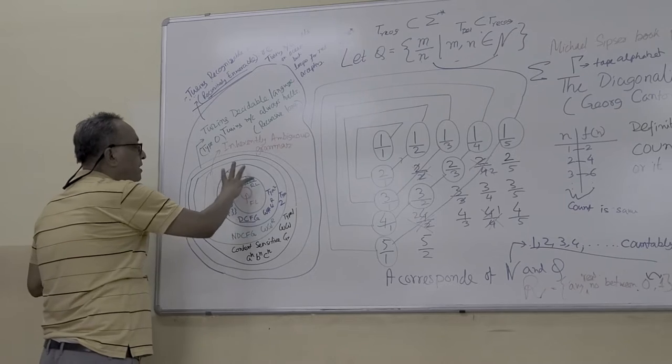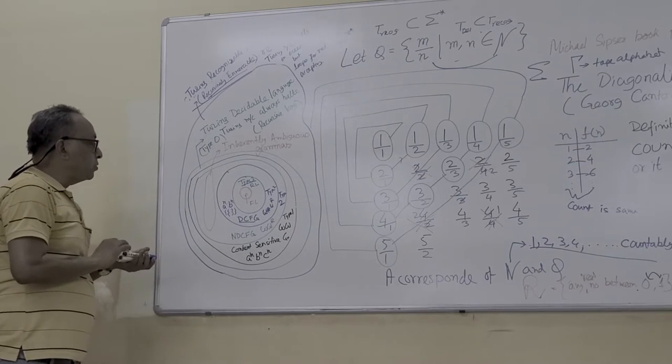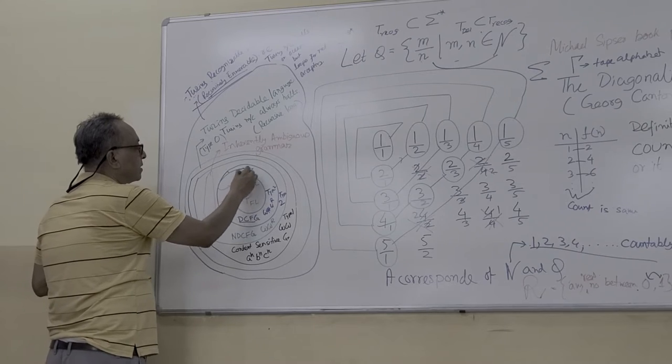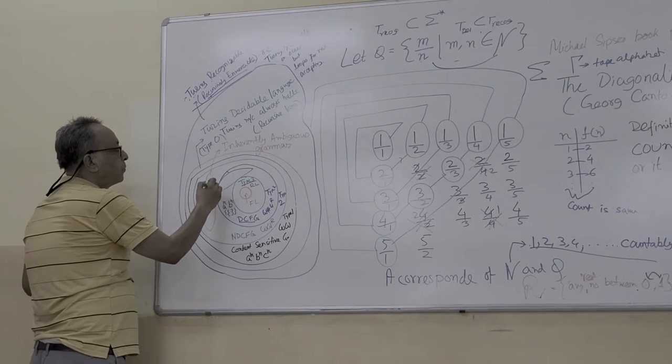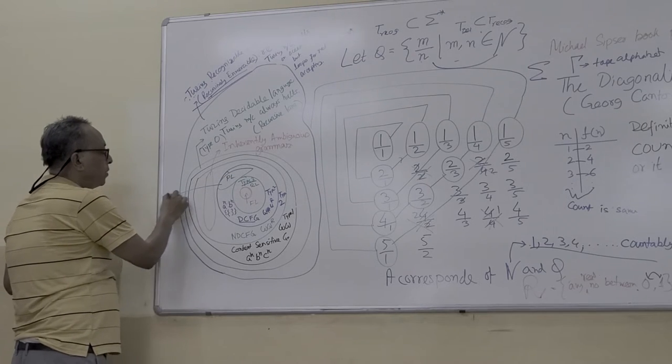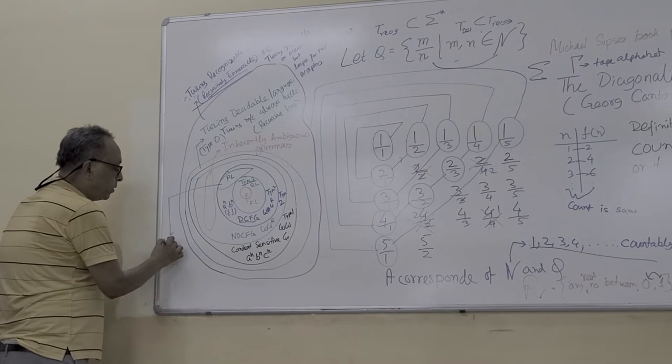This deterministic context-free grammar is very essential because we will use a part of it for our programming languages. We will use part of it, not all. Part of it is programming languages. And here we can make the parsing with O(n).